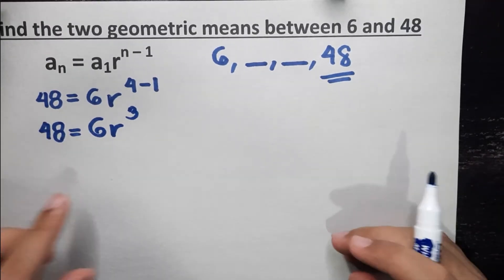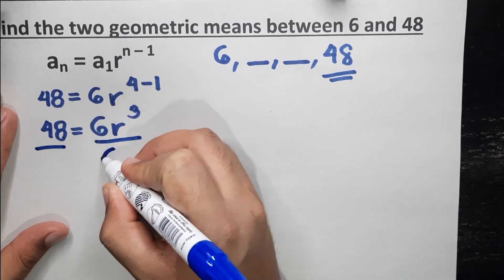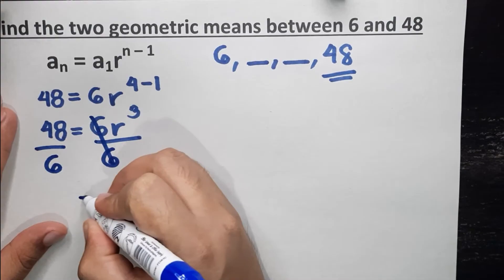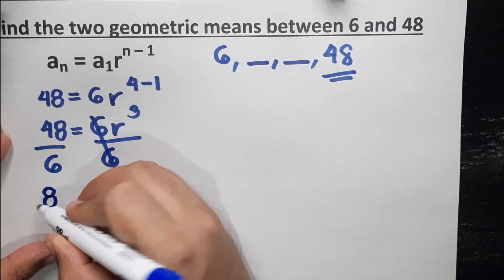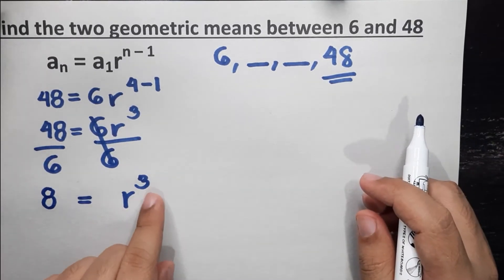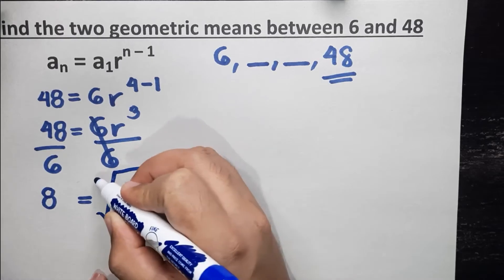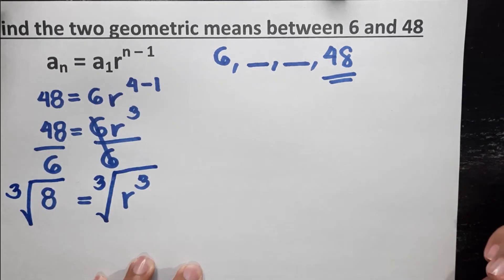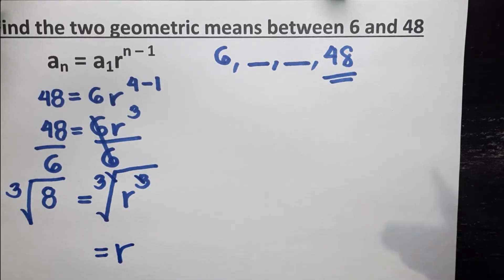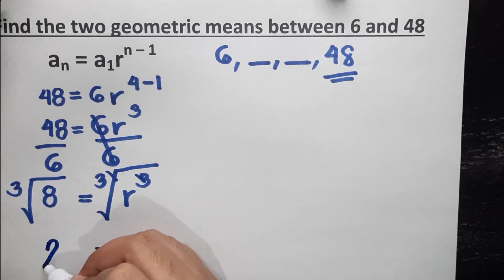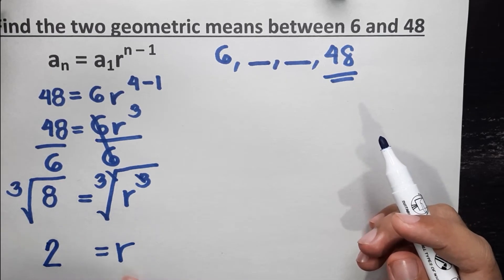So 48 is equal to 6r raised to the power of 3. What we need to do first is to eliminate 6 so that we have r cubed left. So let's divide both sides by 6. We have r raised to the power of 3 equals 8, since 48 divided by 6 gives us 8. We are looking for the value of r, so we have to eliminate the third power by getting the cube root of both sides. The cube root of 8 is 2, because 2 times 2 times 2 equals 8. So our common ratio is 2.